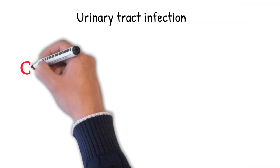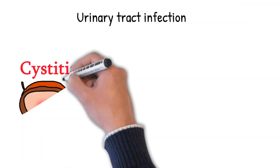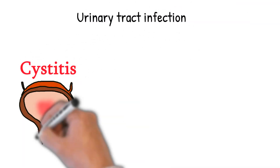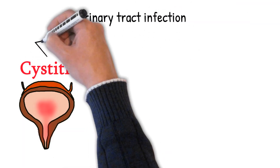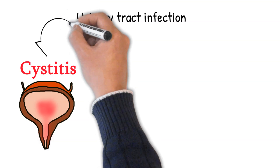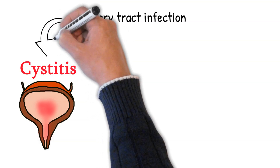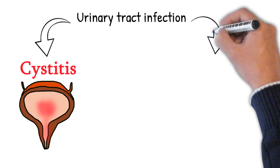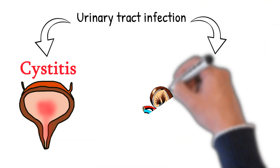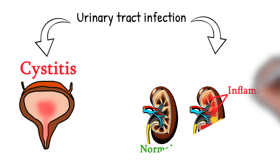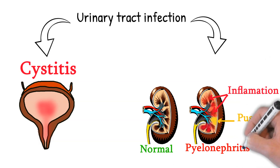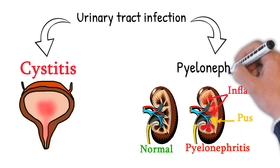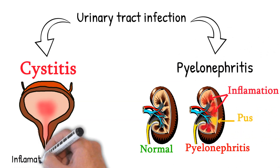A urinary tract infection describes infection which affects some part of the urinary tract. When it affects the lower urinary tract it is known as a bladder infection, cystitis, and when it affects the upper urinary tract it is known as a kidney infection, pyelonephritis.